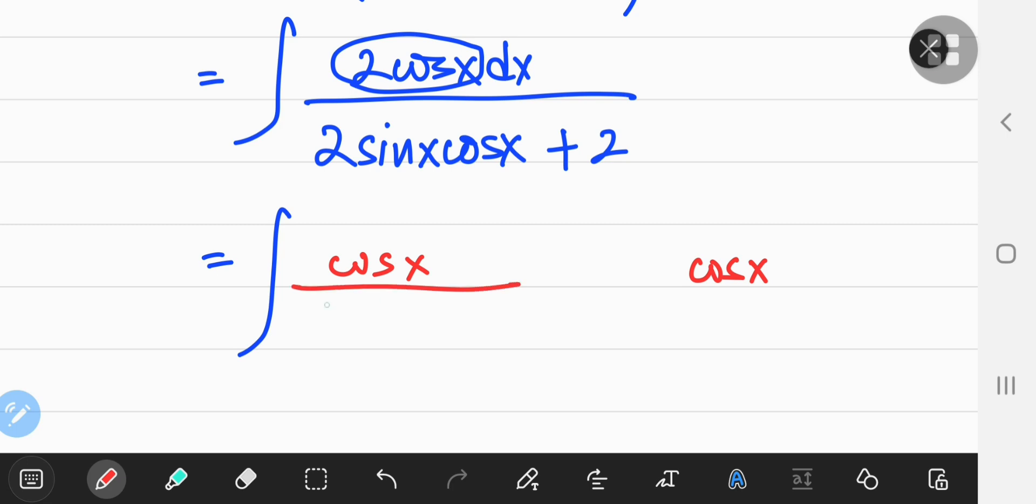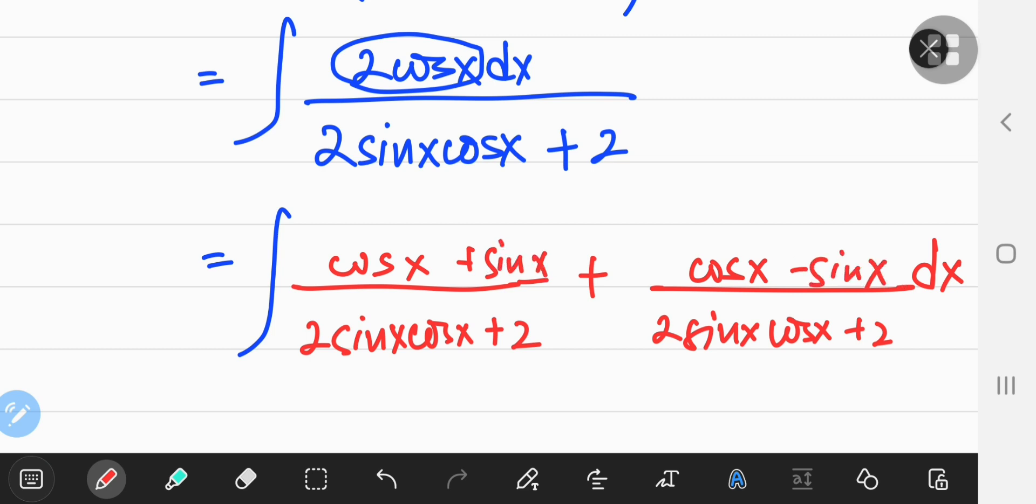Well, let me separate the denominator: 2 sin x cos x plus 2. So what I'm going to do with this extra space is that I'm going to add a sin x and subtract a sin x term as well.